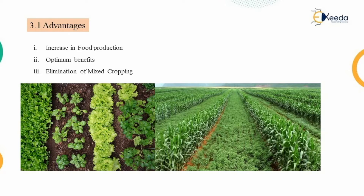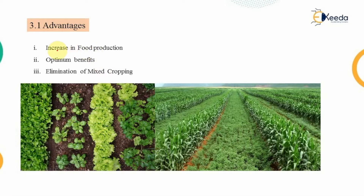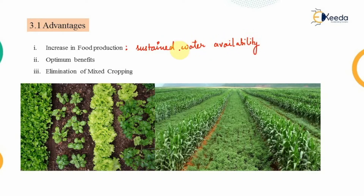First, we will discuss the advantages of a designed irrigation system. The first and most obvious advantage is increasing food production. By ensuring a sustained, continuous water supply, there will be increased food production. Since water is available 24/7 because of the irrigation system, that results in increased yield of crops and obviously increases food production.